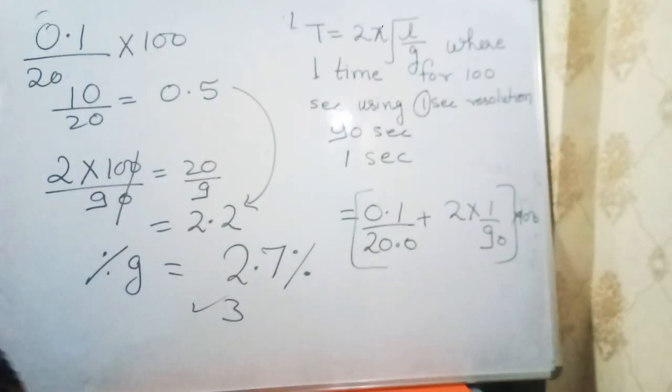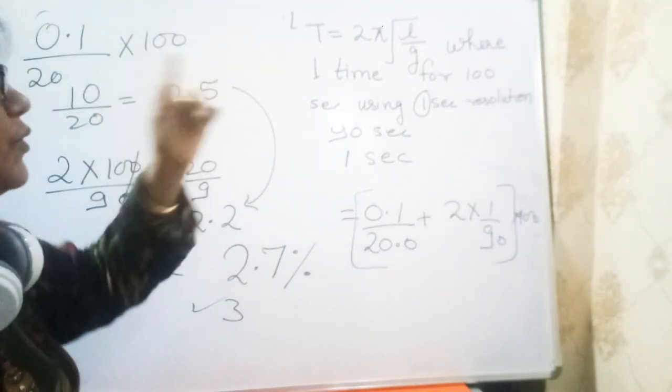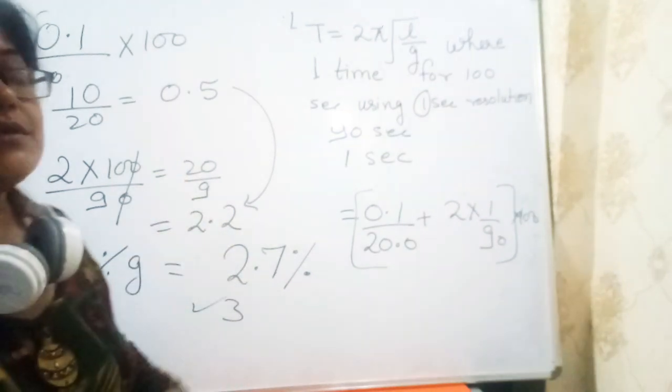This is the percentage accuracy of gravity. If we have option 3 in the choices, we take 3. Just write it down. Don't skip the video - I'm going to take some more questions that are very important and different from these concepts.